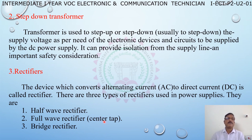Second block: step-down transformer. The transformer is used to step up or step down the supply voltage as per the need of the electronic devices and circuits to be supplied by the DC power supply. It also provides isolation from the supply line, which is an important safety consideration.